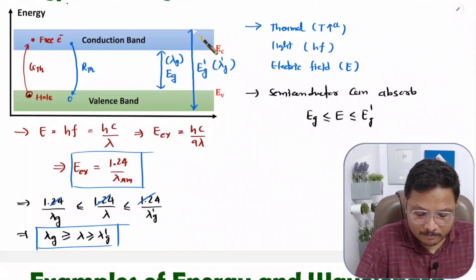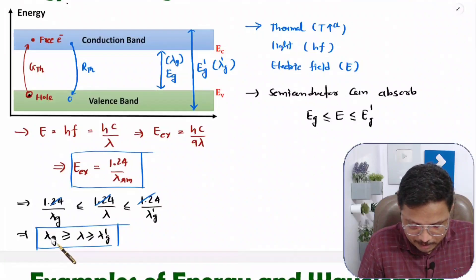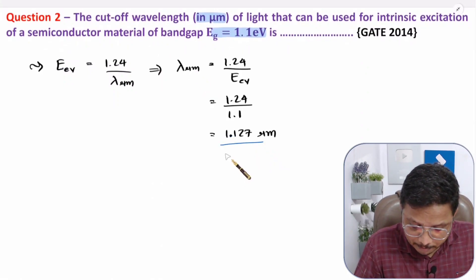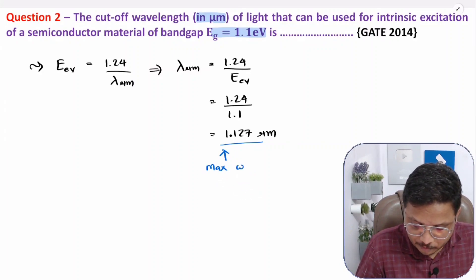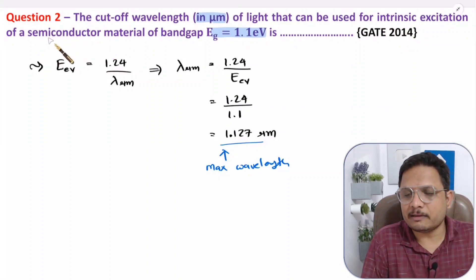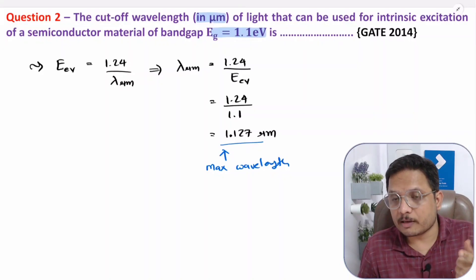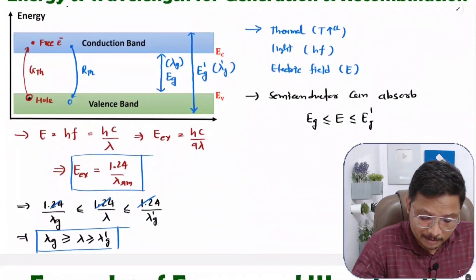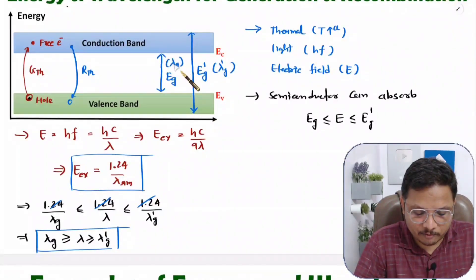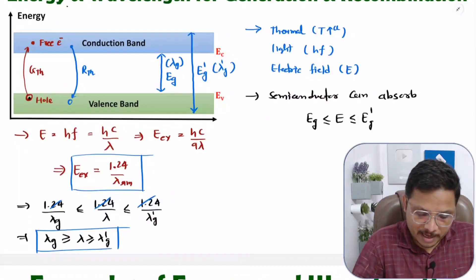With EG, maximum wavelength is λG — that is the cutoff wavelength. EG' (a higher energy) that could be absorbed by an electron corresponds to a wavelength λG', which will be lower than λG. So lower wavelengths down to λG' can also be absorbed, but for that you need to have energy EG'. Here we are given only EG, so the cutoff wavelength is λG, which is the maximum. Up to minimum λG' it could absorb, but for that you need EG' data.